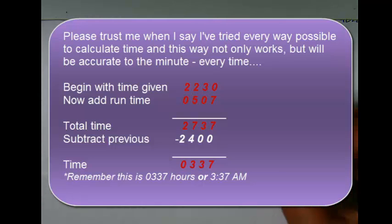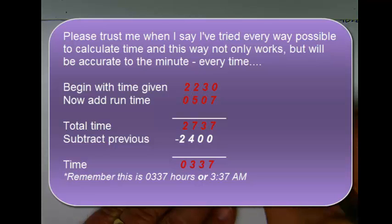Because the number in the hours column is more than 24, this tells me this is into the next day. So if I'm going to figure out exactly what time it is the next day, I will simply subtract the previous 2400 hours of military time from that total.